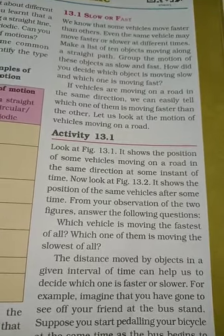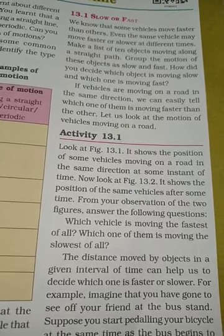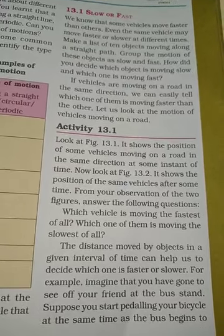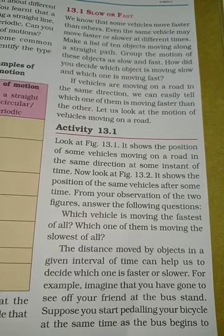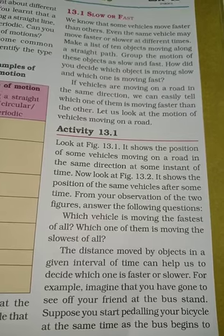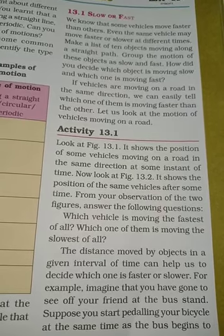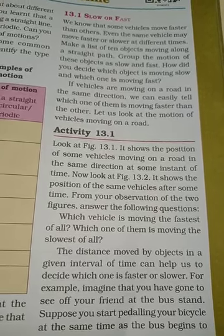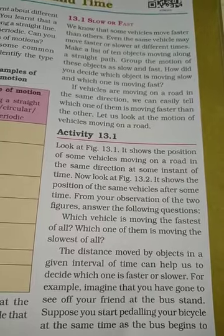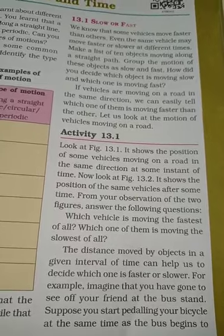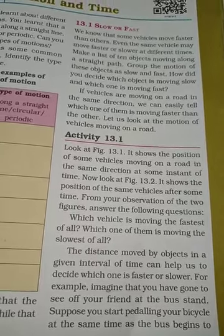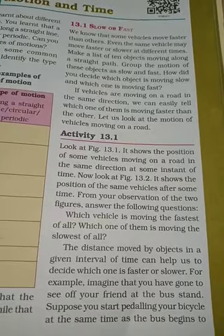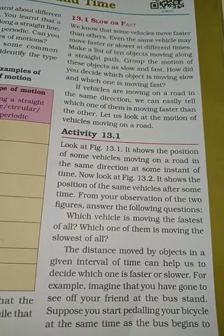Which one of them is moving the slowest of all? The distance moved by an object in a given interval of time can help us decide which one is faster and which is slower. This distance and the time period are given to us to know which vehicle is fast or slow.